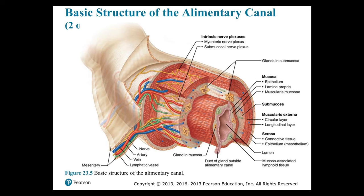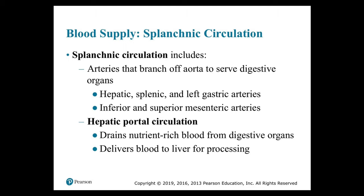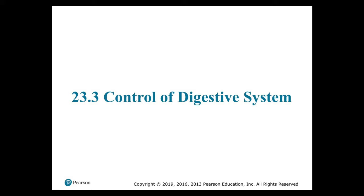Next is blood supply — splanchnic circulation. Splanchnic circulation includes arteries that branch off the aorta to serve the digestive organs: the hepatic going to the liver, splenic going to the spleen, left gastric arteries going to the stomach, and the inferior and superior mesenteric arteries going to the intestines. Hepatic portal circulation drains nutrient-rich blood from the digestive organs to deliver it to the liver for processing. The activities of the digestive system are regulated by neural, hormonal, and local mechanisms.